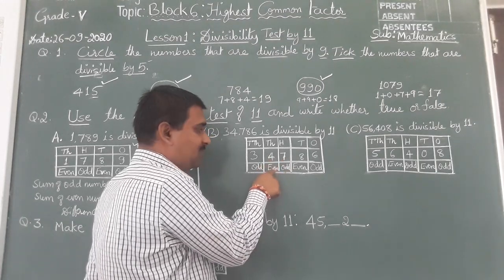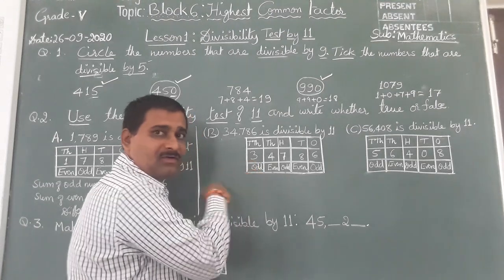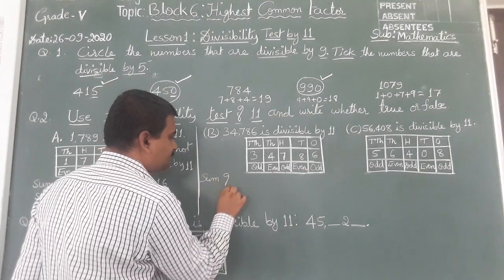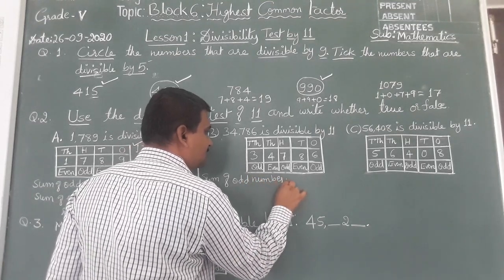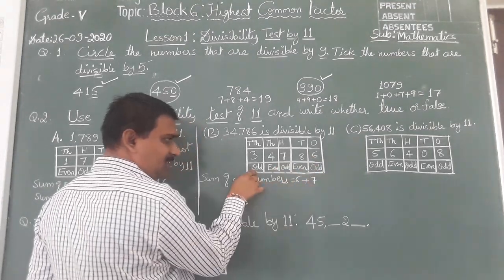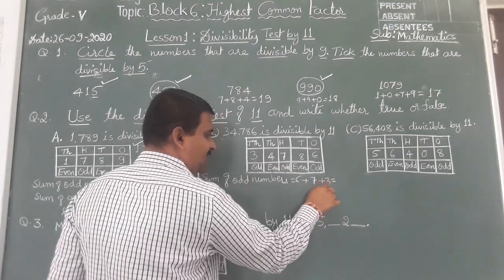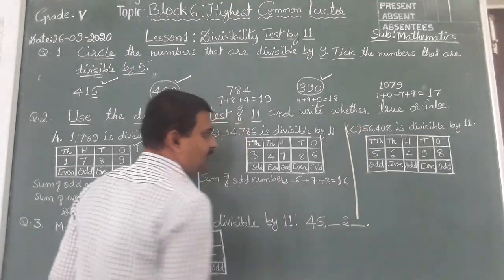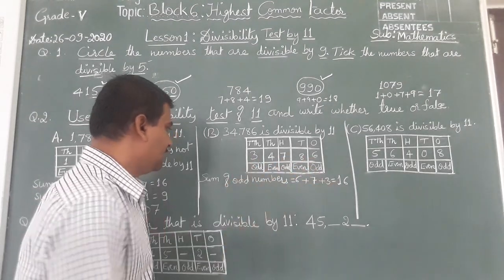Find the sum of odd-place digits: 6, 7, and 3. 6 plus 7 is 13, 13 plus 3 is 16. Now find the sum of even-place digits: 8 and 4. 8 plus 4 is 12.